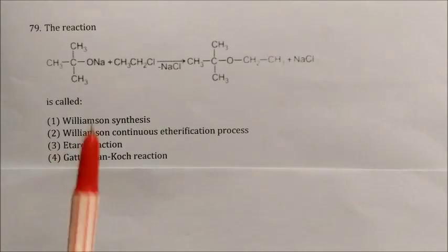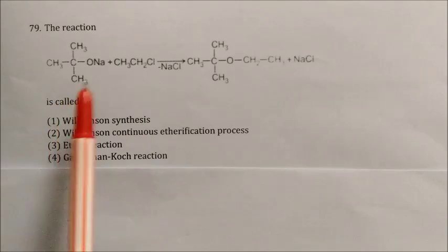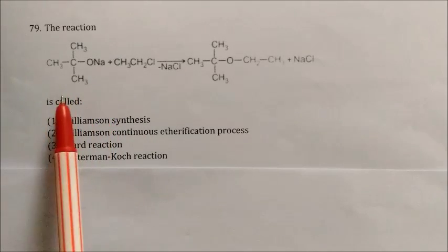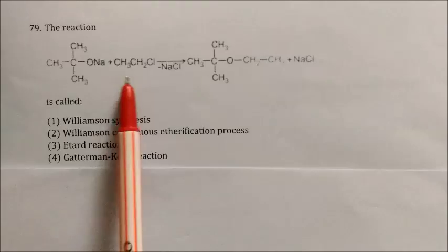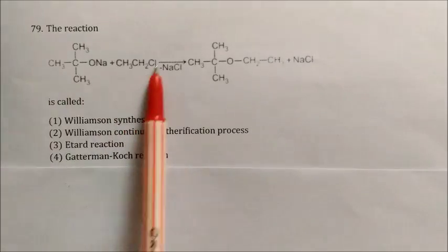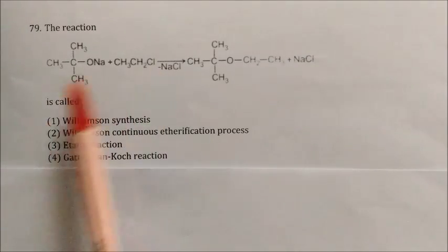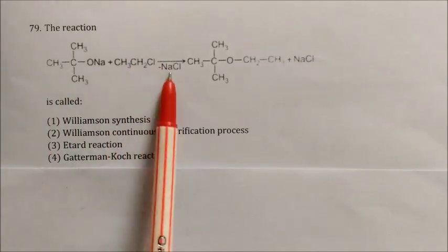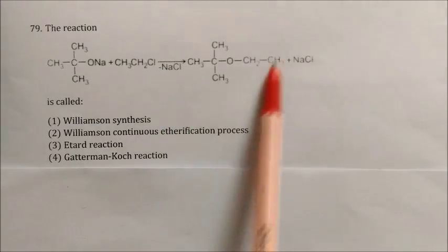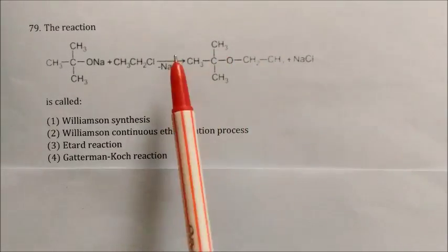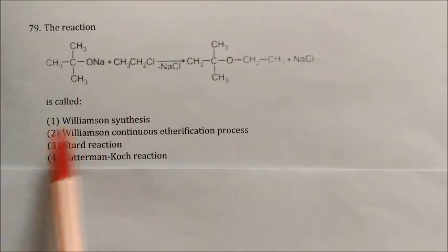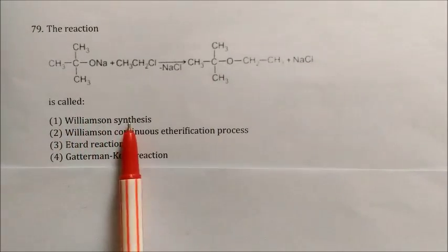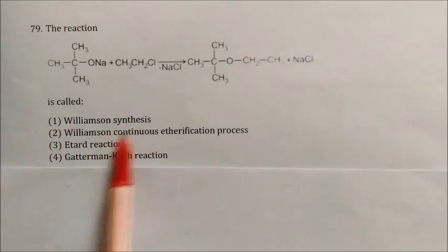Question: Sodium butoxide reacts with ethyl chloride. What happens? NaCl is released as a precipitate and an ether is formed. This reaction is the Williamson synthesis, which is used for the preparation of ethers.